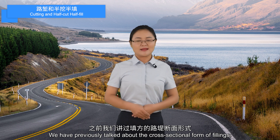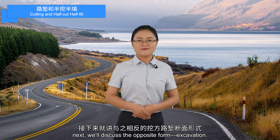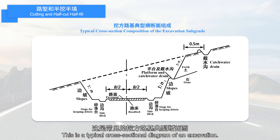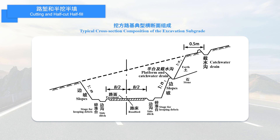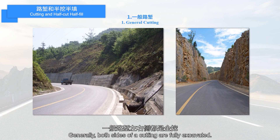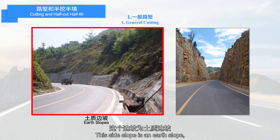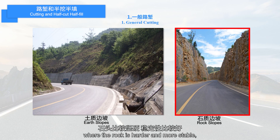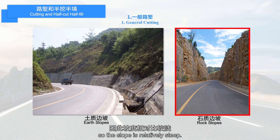We have previously talked about the cross-sectional form of fillings. Next, we'll discuss the opposite form: excavation. This is a typical cross-sectional diagram of an excavation. Generally, both sides of a cutting are fully excavated. This side slope is an earth slope with a relatively gentle gradient. This one is a rock slope where the rock is harder and more stable, so the slope is relatively steep.